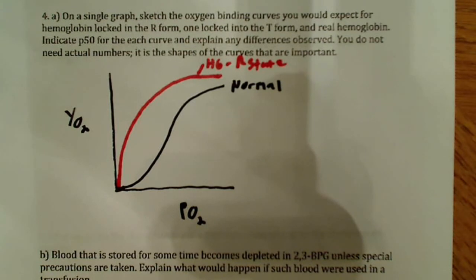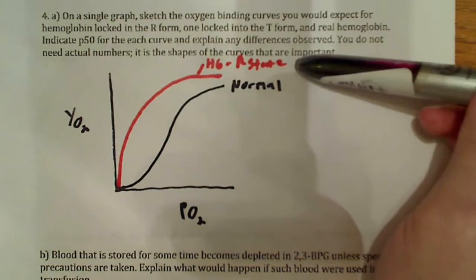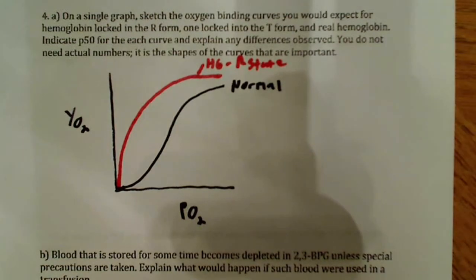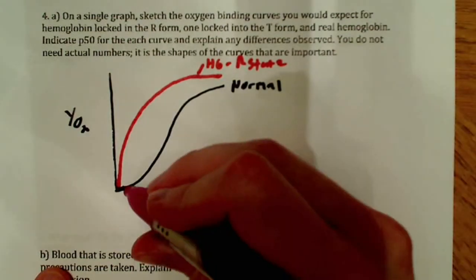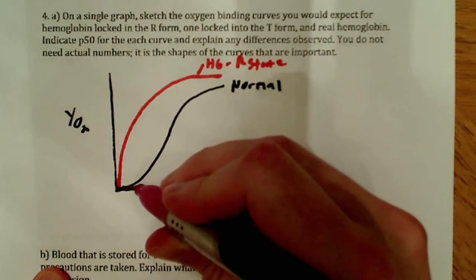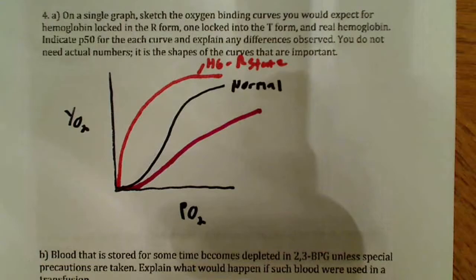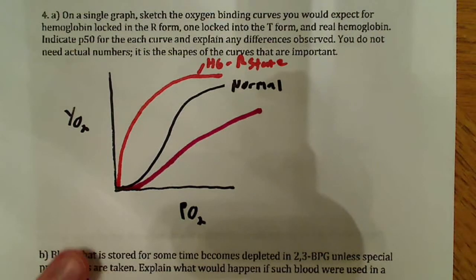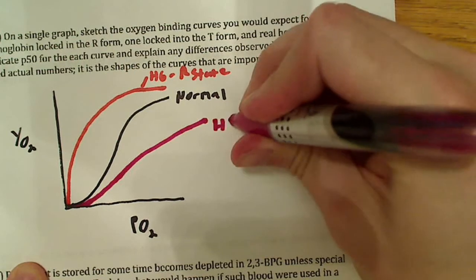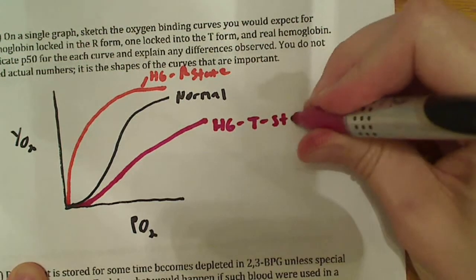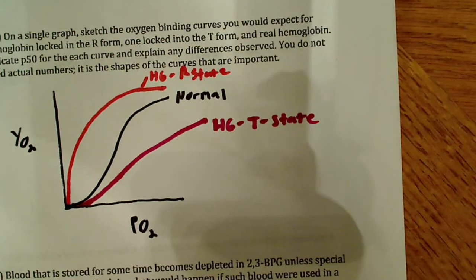Now, if hemoglobin is locked in the T state, that's the inactive form or the deoxygenated form. Now, they want us to say what it is in the T form, which is the deoxygenated form of hemoglobin, which has low O2 affinity and releases O2 even when PO2 values are quite high. So, that means it's going to be very easy to release PO2. Since this doesn't have to necessarily be an accurate graph, it's going to look something like that. It's almost going to be a straight line, basically. And that's going to be hemoglobin in the T state. And that's pretty much exactly what it's going to look like.